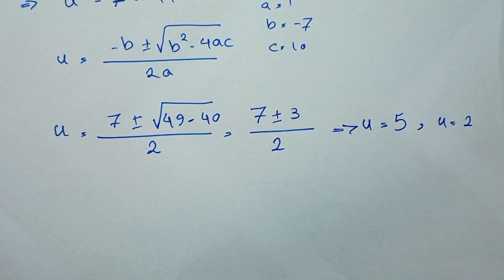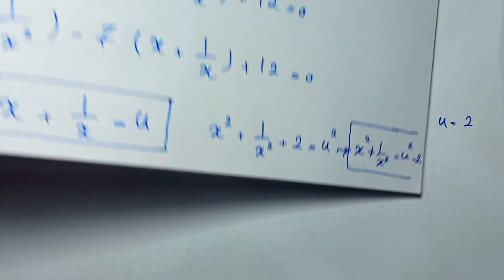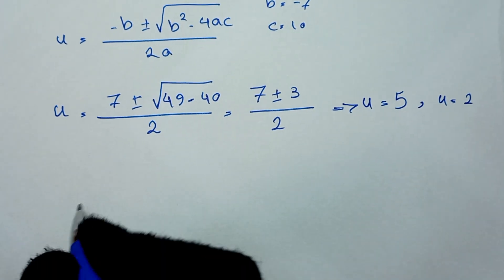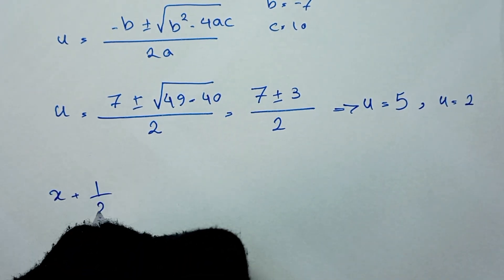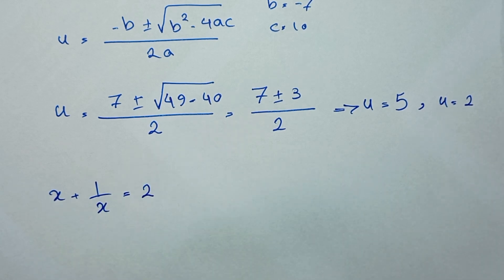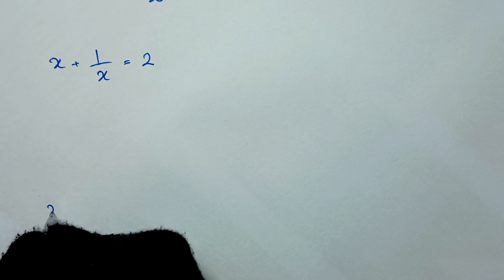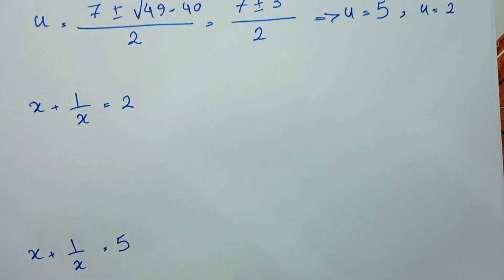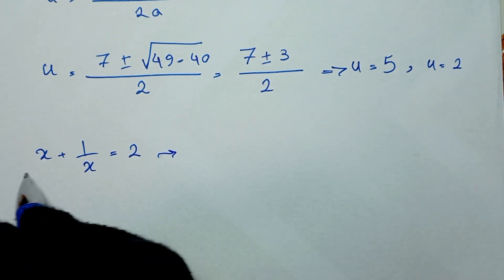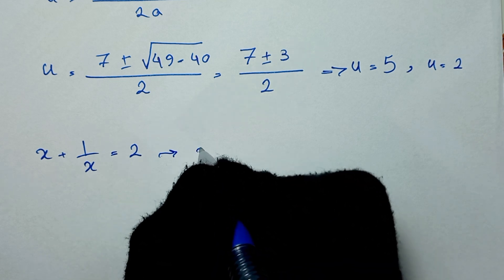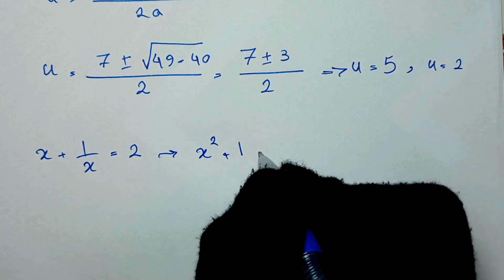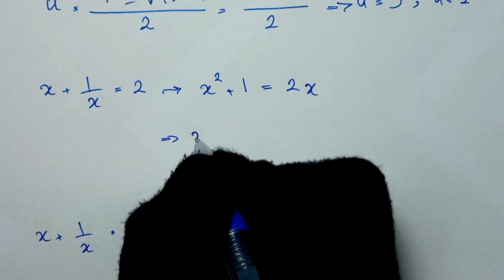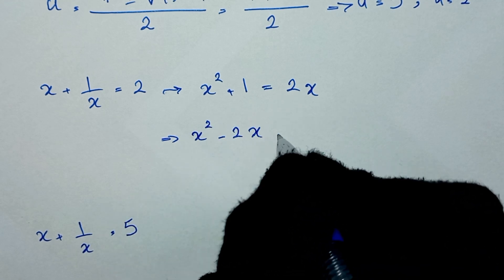We have two values for u. Since u equals x plus 1 over x, we set x plus 1 over x equal to 2. Multiplying both sides by x gives x squared plus 1 equals 2x. Bringing 2x to the left side: x squared minus 2x plus 1 equals 0.